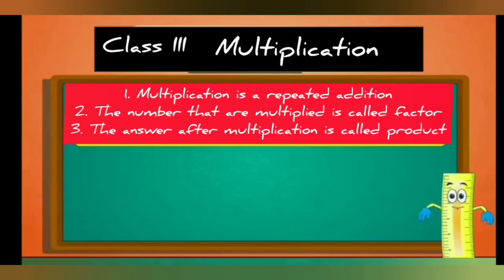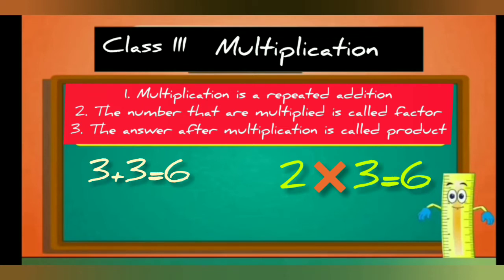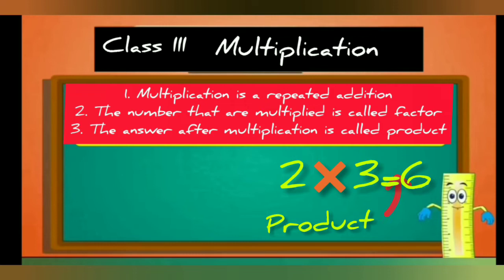Suppose we take the example: two multiplied by three. Two times three means three plus three. When we add two times three, we get the addition sentence for two multiplied by three. The answer after multiplication is called the product.